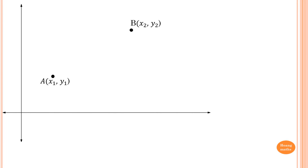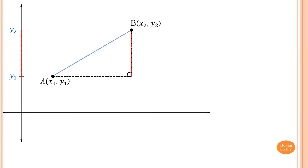Let's say there are two points A and B — point A is (x1, y1) and point B is (x2, y2). We want to find the distance between these two points, so we construct a right triangle. The vertical distance between them is y2 minus y1, and the horizontal distance is x2 minus x1.